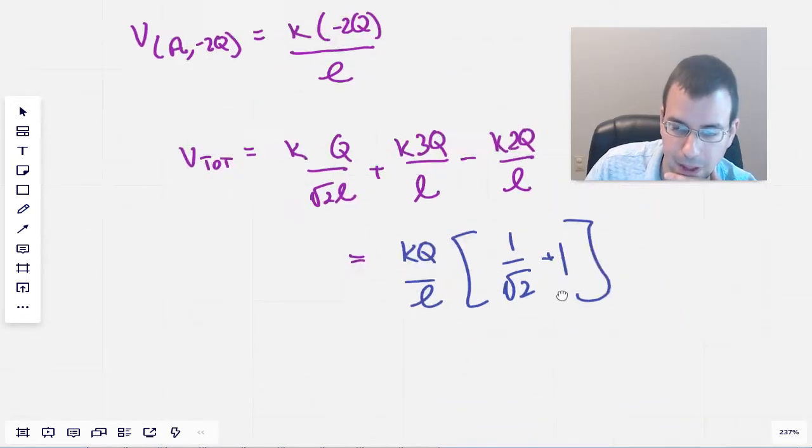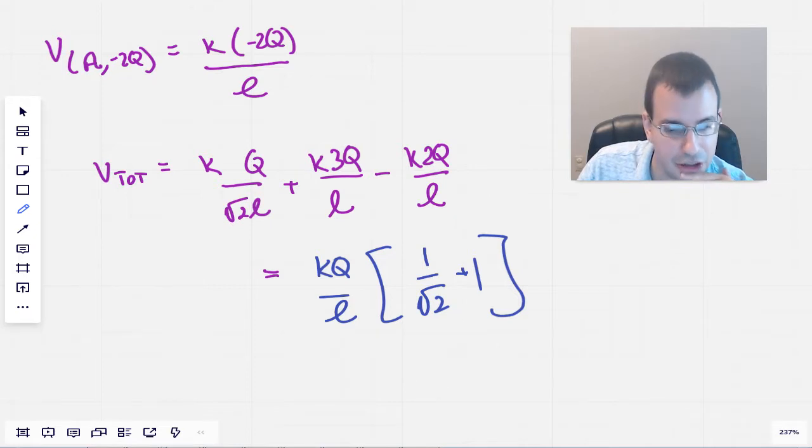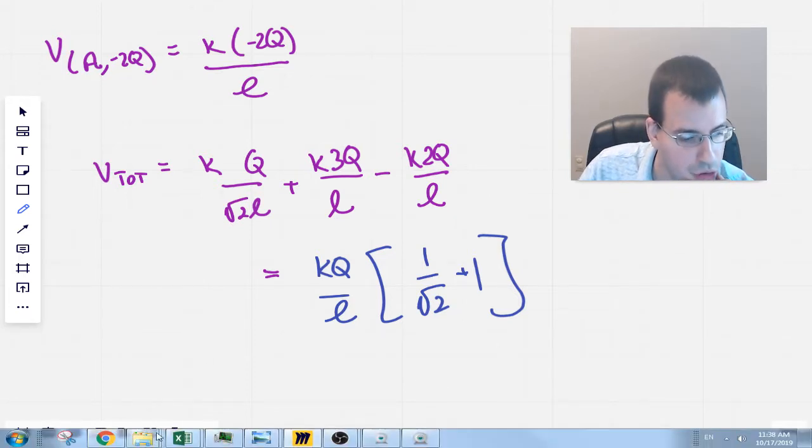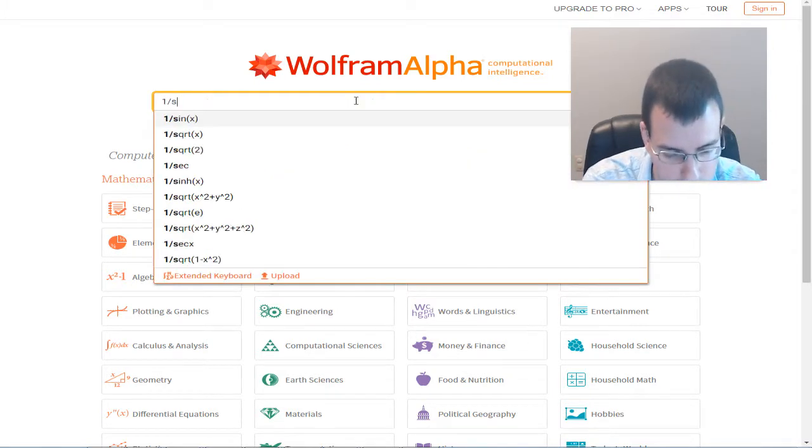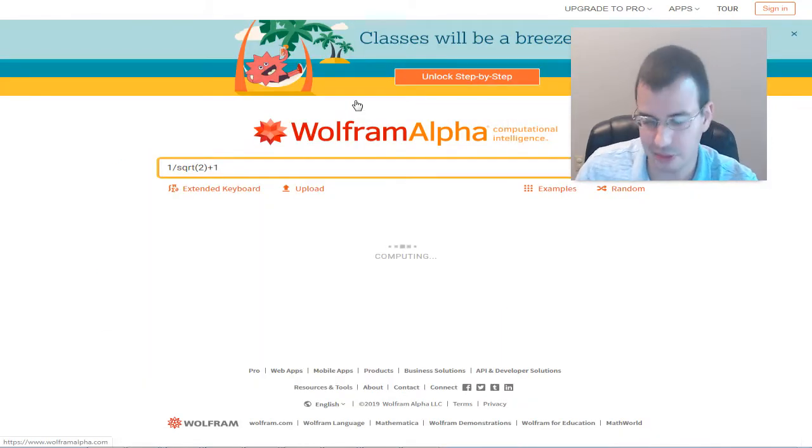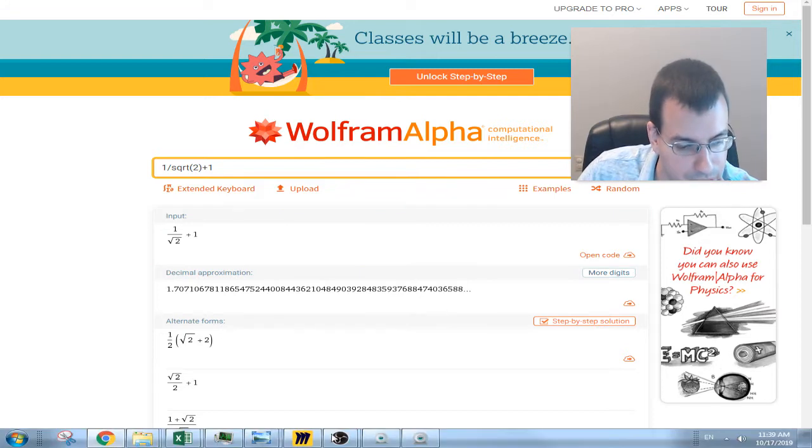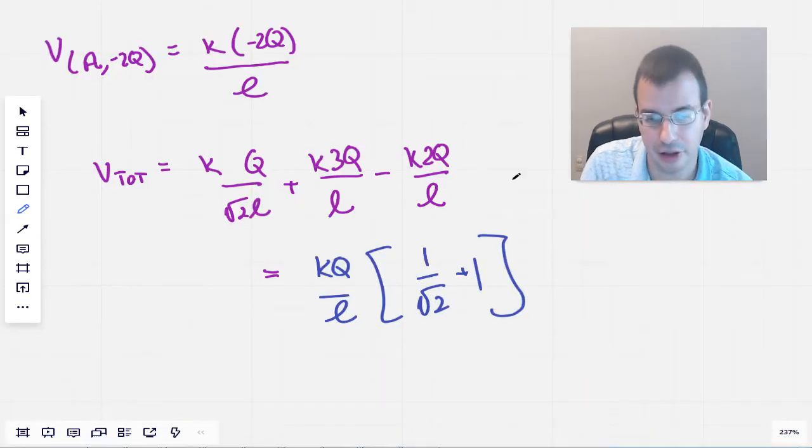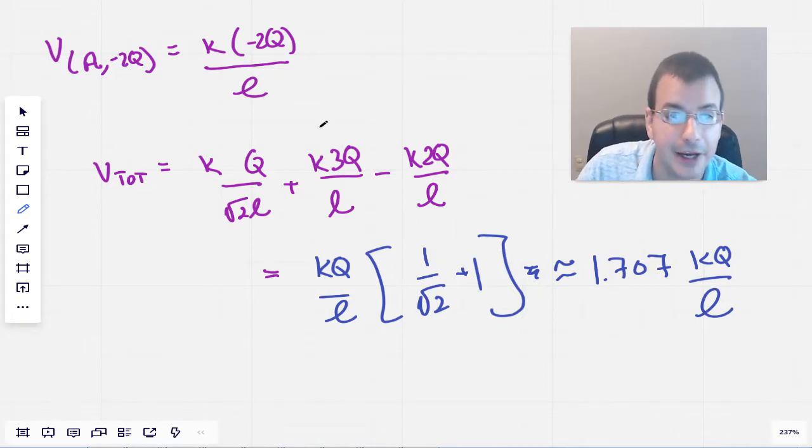So the answer, I would be tempted to leave it in this form. But if you want a more numeric answer, we'll go to Wolfram and I will do 1 over square root of 2 plus 1. Probably like 1.7. Yeah. 1.707 equals, is about 1.707 K Q over L.